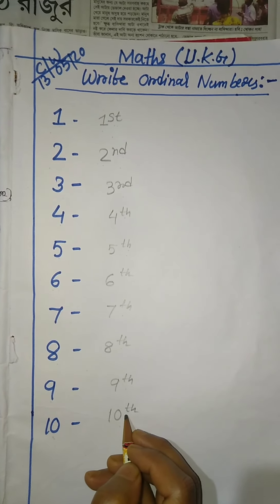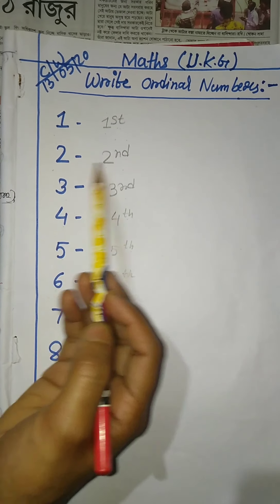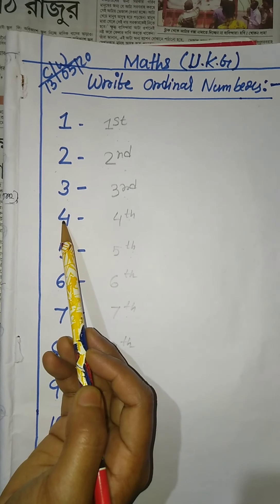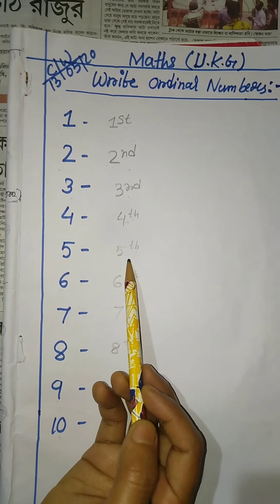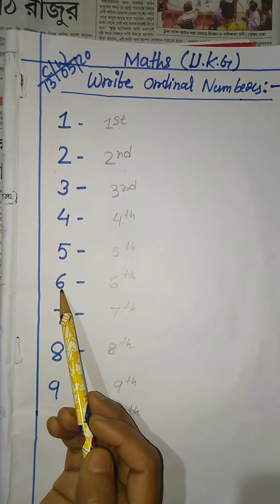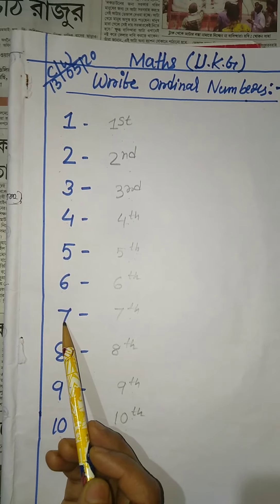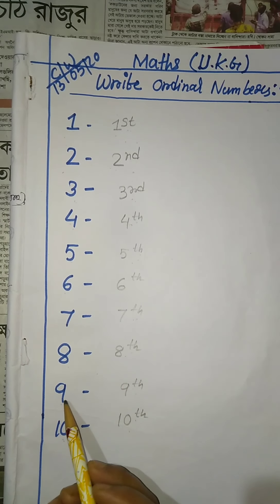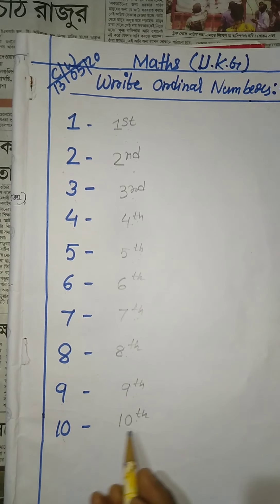Now everyone say with me: one — first; two — second; three — third; four — fourth; five — fifth; six — sixth; seven — seventh; eight — eighth; nine — ninth; ten — tenth.